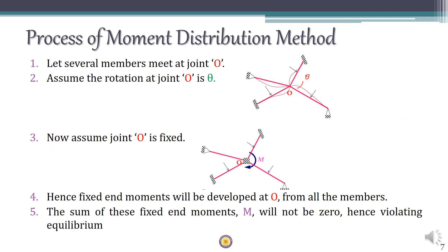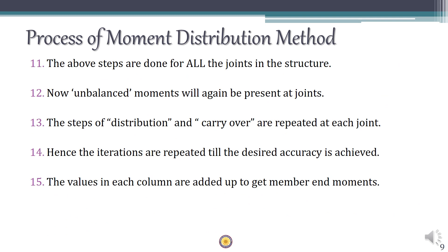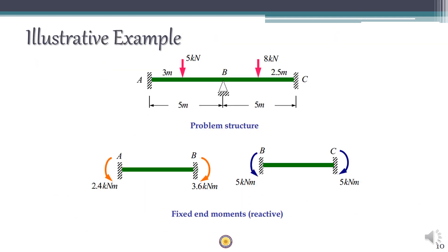A step-by-step process for solving the moment distribution method has been provided; we will go through it in detail in the coming classes using problems. For the illustrative example, we have a two-span beam each of five meters. Span AB has eccentric loading, so we use the formulas Pab²/L² and Pa²b/L² for the fixed end moments. For span BC the loading is symmetric, so we use PL/8.